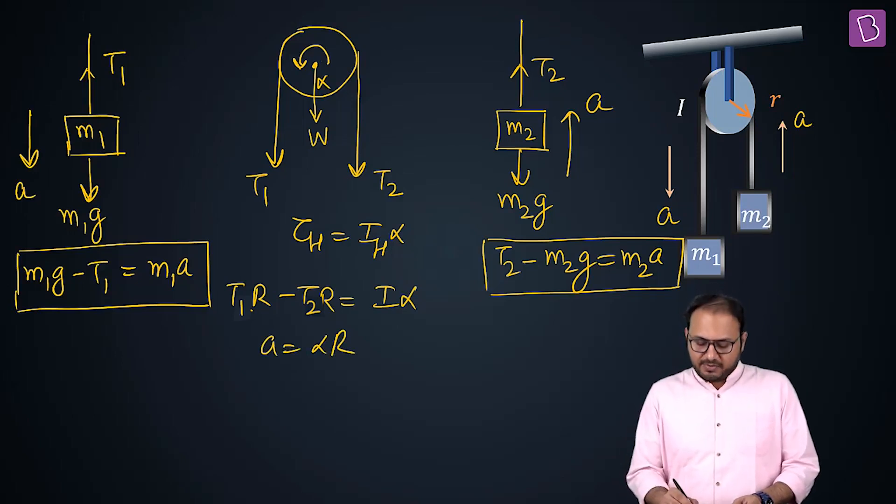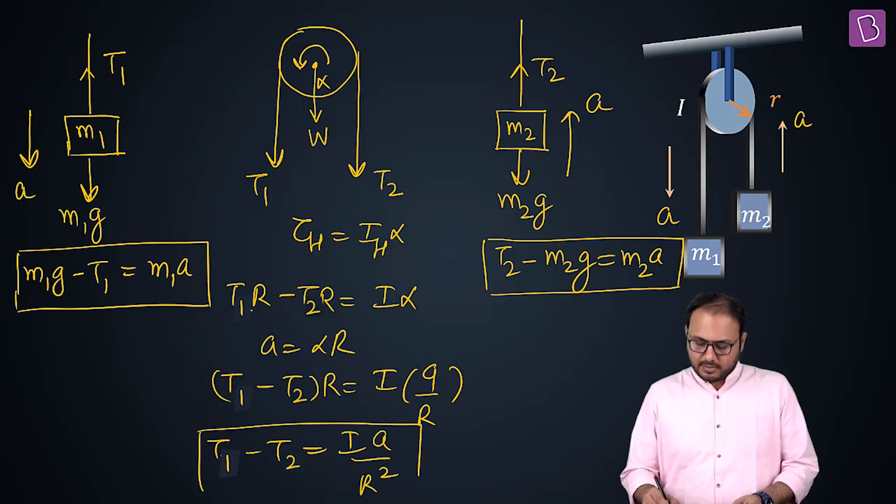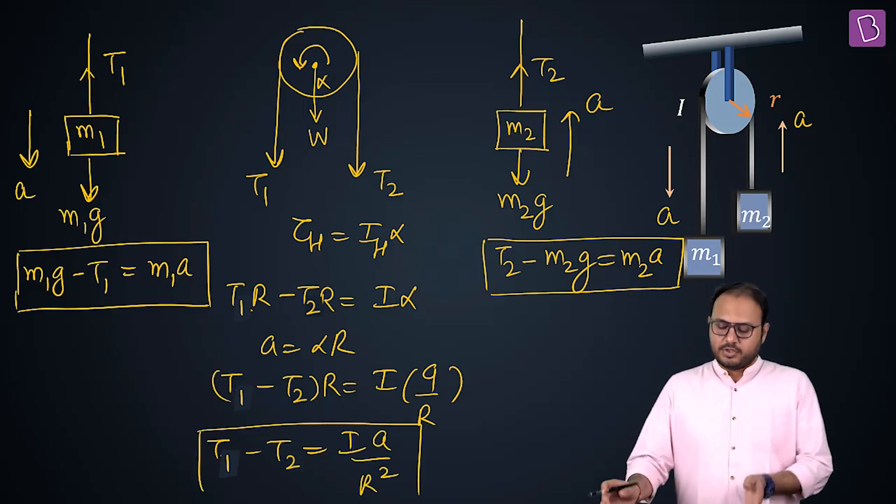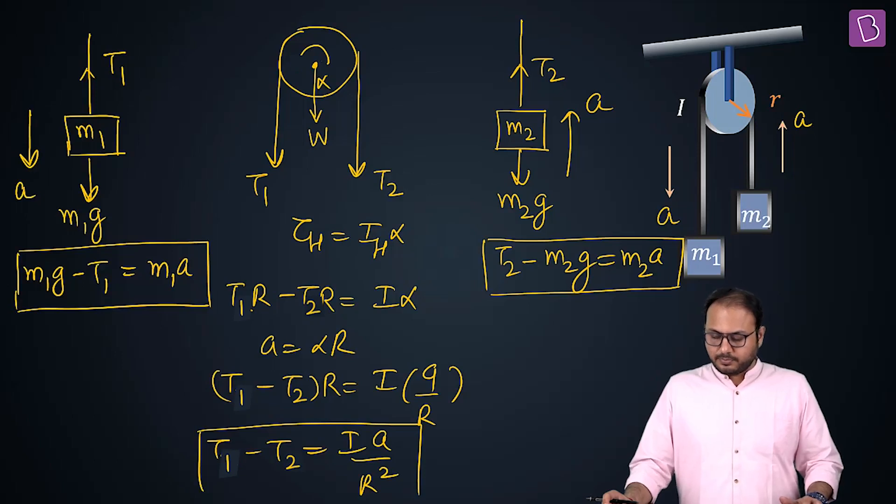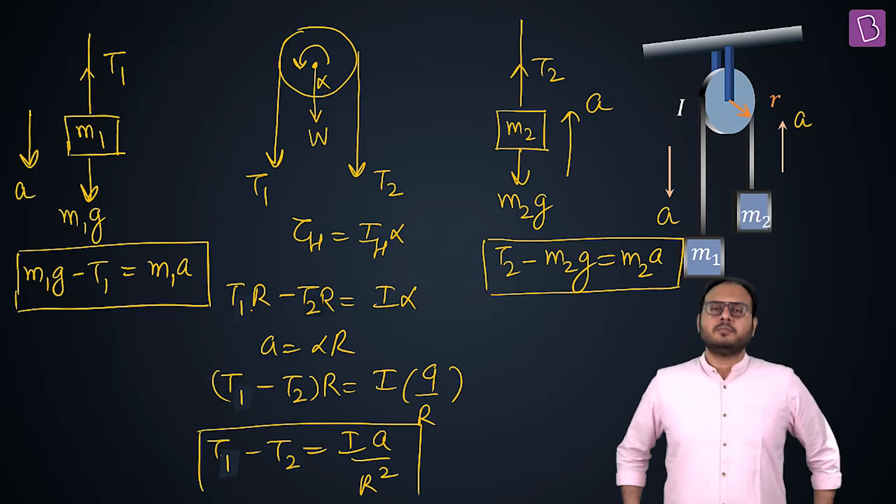So, if I put alpha as A by R, T1 minus T2 times R is equal to I, A by R. So, T1 minus T2 is equal to I, A by R square. Check out the three boxed equations, please.